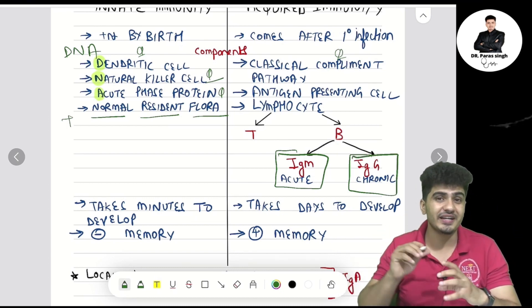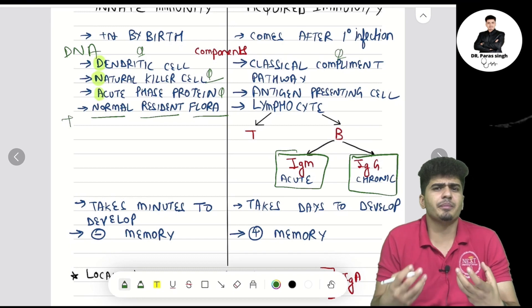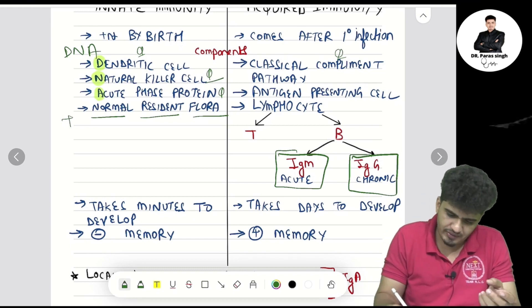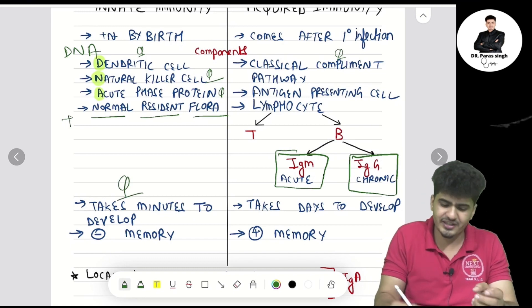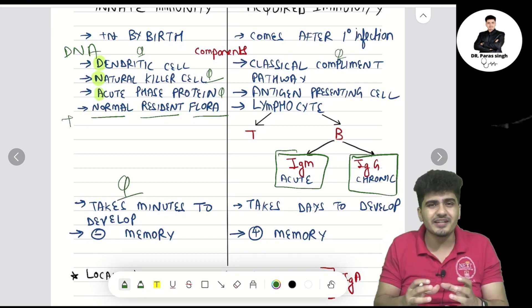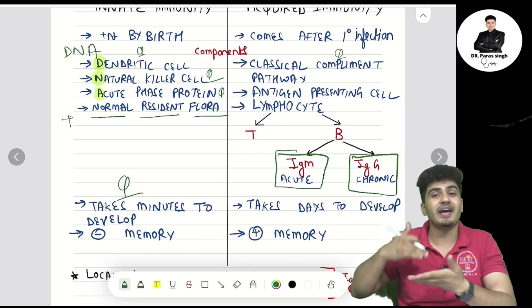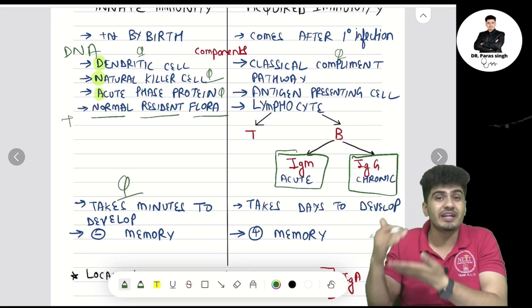IgG is the marker of chronic infection. Innate immunity is present by birth and takes just minutes to develop, whereas acquired immunity takes more time to develop because it develops after the primary encounter.